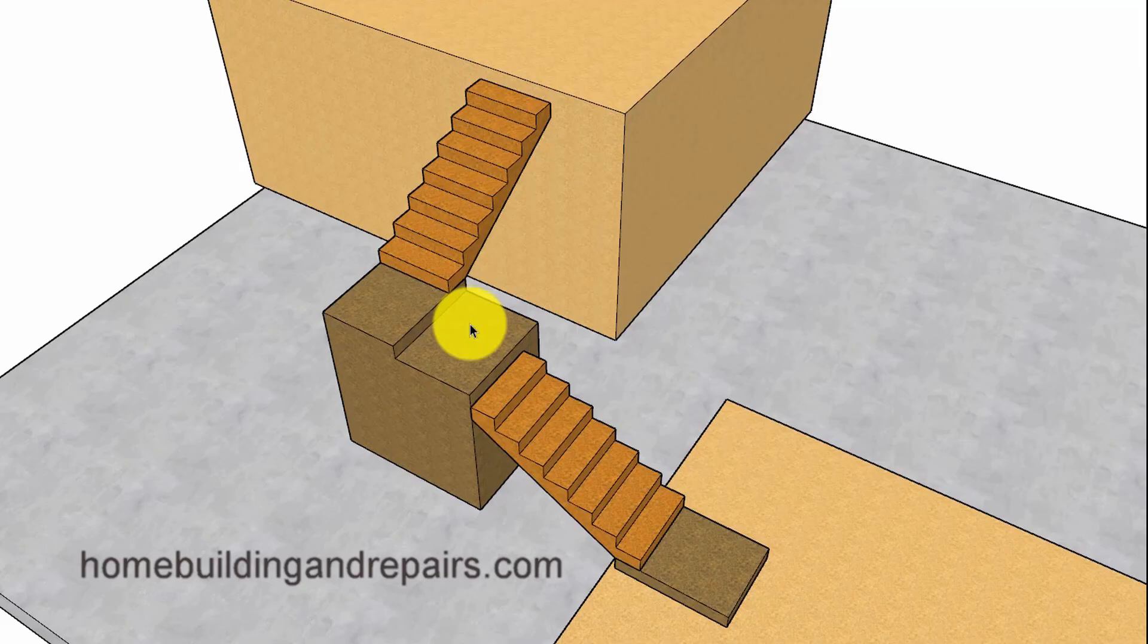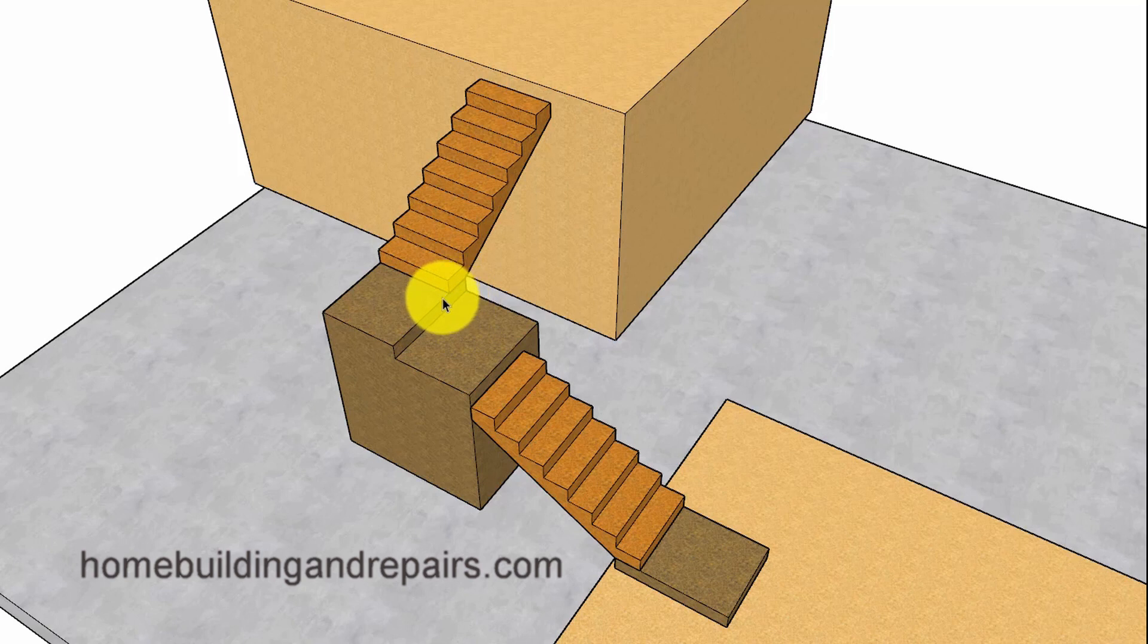Or another situation that might allow you to lower the riser height for one stairway or to increase the riser height would be to change the riser height here because it would be separated by two landings. So in this example here, we would have an upper floor, lower floor, landing, flight of stairs, landing, landing, flight of stairs.